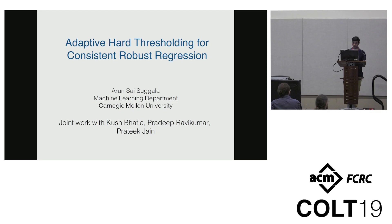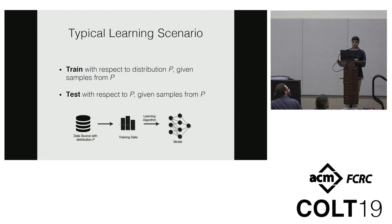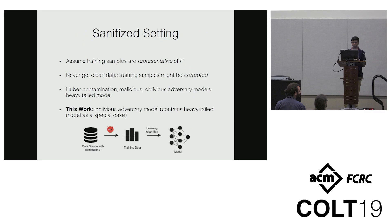Let me formally introduce the problem setup. We study linear regression under the oblivious adversary model. The true uncorrupted data points (xi, yi) are generated from a linear model. The covariates xi are sampled from Gaussian(0, sigma), epsilon_i is a dense noise term, and w* is the unknown regression vector we want to estimate. An adversary corrupts an alpha fraction of the response variables yi, where bi is the corruption added, which is independent of xi and epsilon_i. Given n corrupted training points, we want to estimate w*.